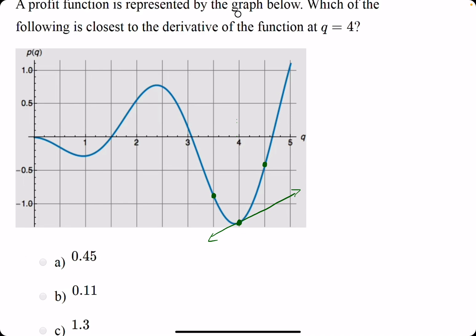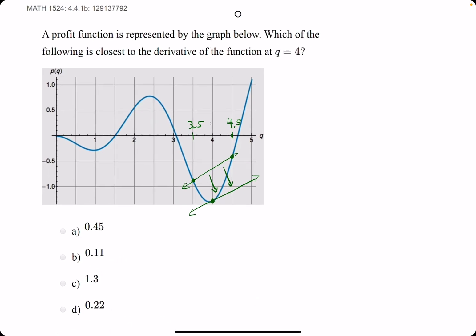If we can find the slope between 3.5 and 4.5, it should be a close enough estimate to the slope of the tangent line. In other words, the slope right at Q equals 4.